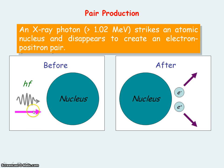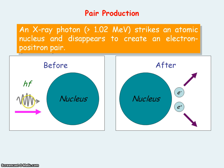Pair production occurs when an X-ray photon strikes an atomic nucleus and disappears to create an electron and positron pair. This process is an example where energy is converted into mass to produce the electron and positron pair.